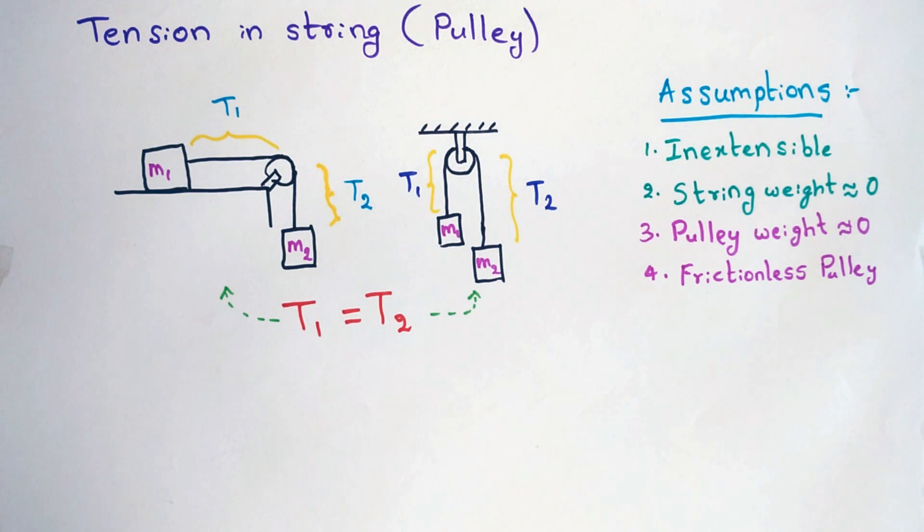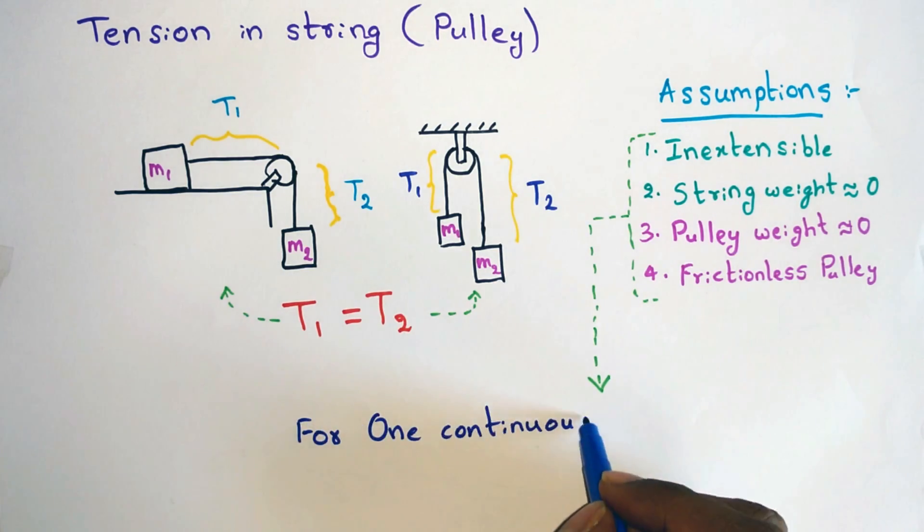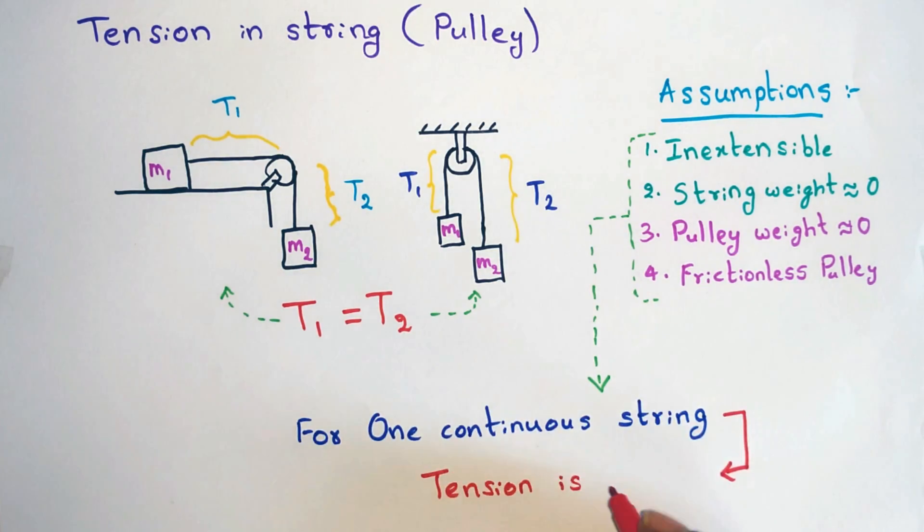We will solve considering the pulley weight in future videos. But for now we will consider all these four assumptions and these assumptions are going to lead us to one statement: for one continuous string the tension is same all along the string irrespective of the number of pulleys the string has passed through.